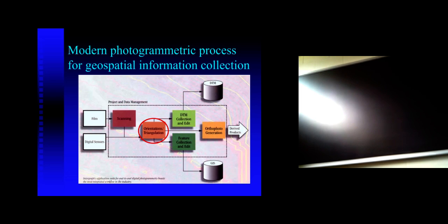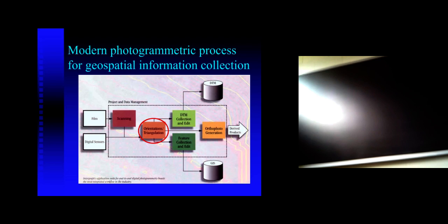After orientation, you have three processes and three major kinds of products in photogrammetric production. First is feature collection, which is exactly what you've done with the stereo.js lab. Then you have digital terrain model generation — production of matrices of heights from imagery, which can be used in different renderings from computer games to other applications. And finally, whenever you have a DTM and orientation, you can produce orthophoto, exactly as we discussed when we discussed rectification. So this is the whole spectrum of processes in photogrammetric production.